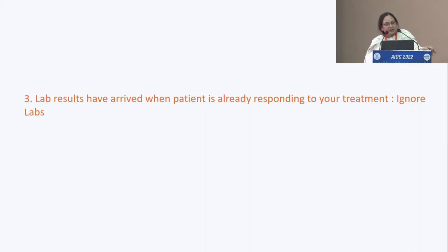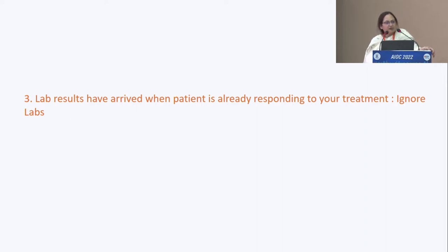The third scenario was lab results arriving when the patient is already responding to treatment. In uveitis, some labs take about two to three weeks to come back, and by that time either you would have given some preliminary therapy or the disease would be showing its natural course. If it's responding, and the lab results indicate something different, don't change.